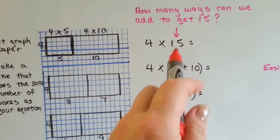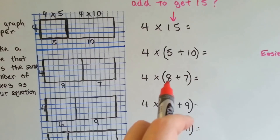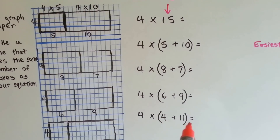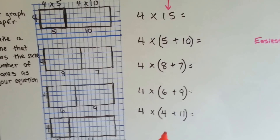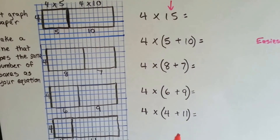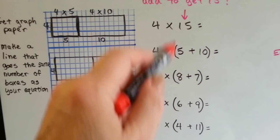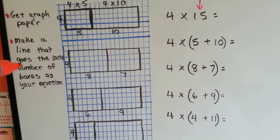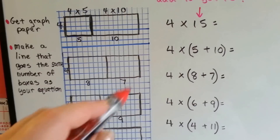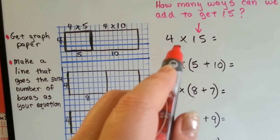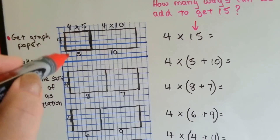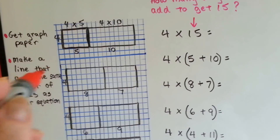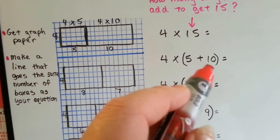There are many ways you can get 15: 5 plus 10, 8 plus 7, 6 plus 9, 4 plus 11. We could have even done 3 plus 12, or 2 plus 13, or 1 plus 14. So you make a line that goes the same number of boxes as your equation. If you're doing 4 times 15, you would make 4 boxes coming down this way and 15 boxes going this way. This one is the 4 times 5, and the 4 times 10.